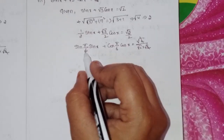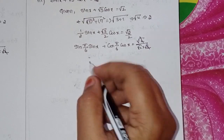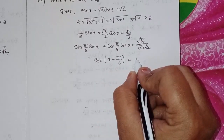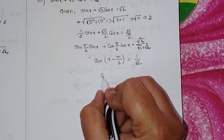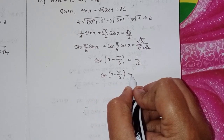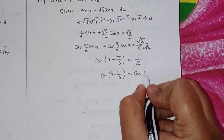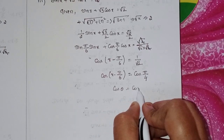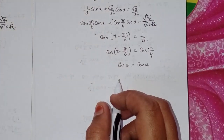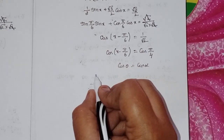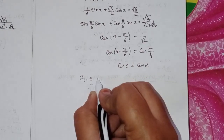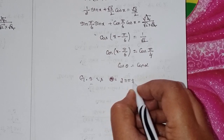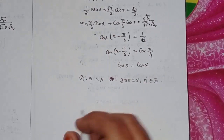Root 2 and root 2 cancel giving 1/√2. Using sin a·sin b + cos a·cos b = cos(a − b), we apply the formula to get cos(x − π/6) = 1/√2 = cos(π/4). For cosθ = cosα, the general solution is θ = 2nπ ± α for all n ∈ ℤ.